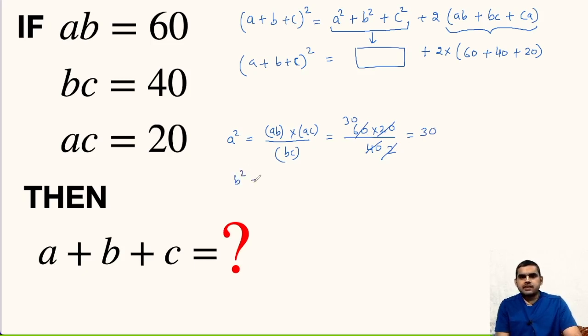Likewise, B square can be written as, here it will be AC, here it is BC multiplied with AB. Here C and C will get cancelled and A and A will get cancelled. So B times B will be B squared.